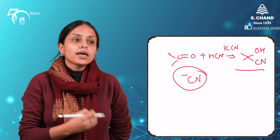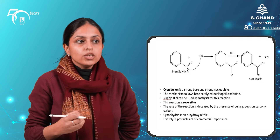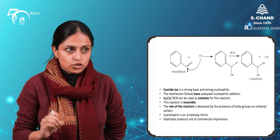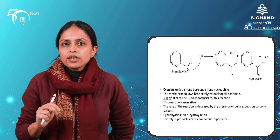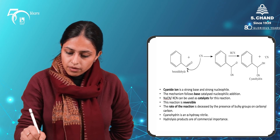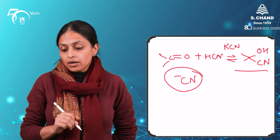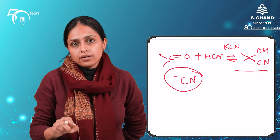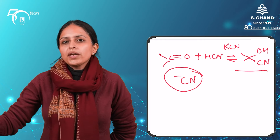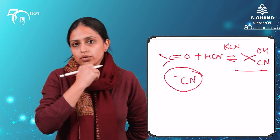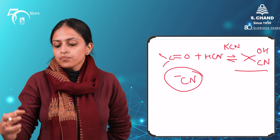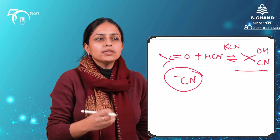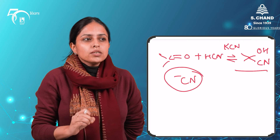The cyanide attacks the carbonyl carbon, and the intermediate easily extracts a proton from HCN, giving the cyanohydrin product. The mechanism is base-catalyzed nucleophilic addition; sodium cyanide or KCN can both be used as catalyst. This cyanohydrin formation is a reversible reaction — the more substituted the carbonyl compound, the lower the rate of reaction and the more the equilibrium shifts back toward the carbonyl compound. Hindered ketones will not give cyanohydrin as the major product.